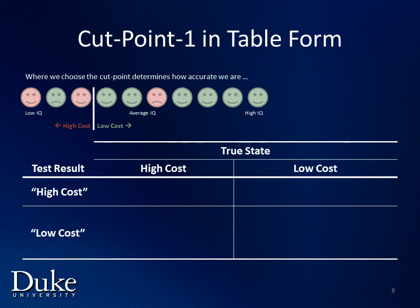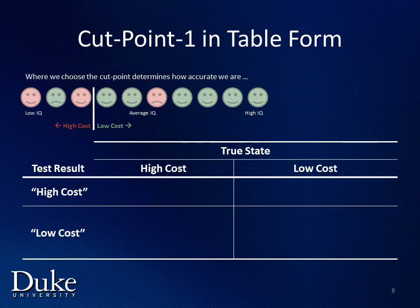We would like to find a way to show the trade-offs of using various cut points. To do this, we start by putting our data in a two-by-two table with a column showing the true state and the rows showing the test result.